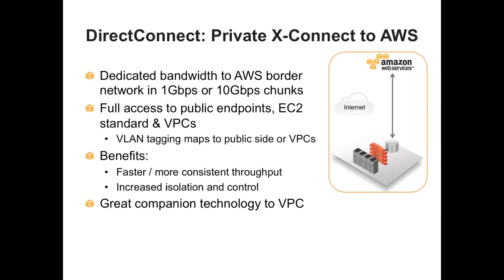Another important service that really goes hand-in-hand with VPC is Direct Connect — that's your dedicated bandwidth. It comes into a border network with AWS, and you can buy it in 1 gigabyte and 10 gigabyte chunks. This gives you really consistent throughput. You also have a completely isolated pipe into VPC that's not routed on the public Internet. That can go to a branch office, your existing on-premises data center, or directly to your office. It's available in multiple regions.